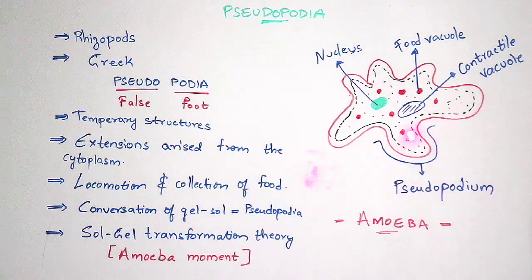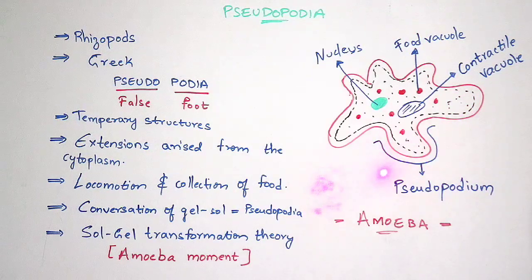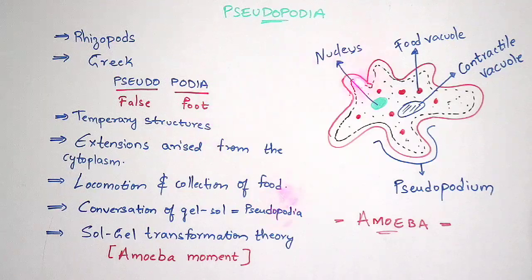This is the structure of amoeba. If you see the amoeba, it consists of a nucleus, food vacuole, contractile vacuole, and Pseudopodium. This is the Pseudopodium which I have indicated with blue color marker over here. This is known as Pseudopodium. The main function of the food vacuole is storage of food, and the nucleus here is a mononucleus.